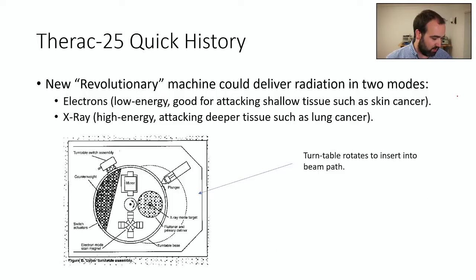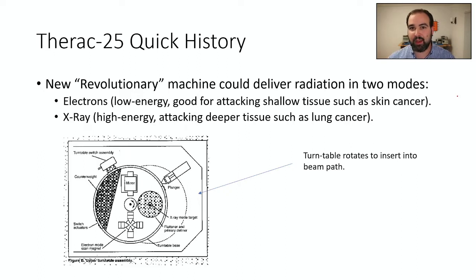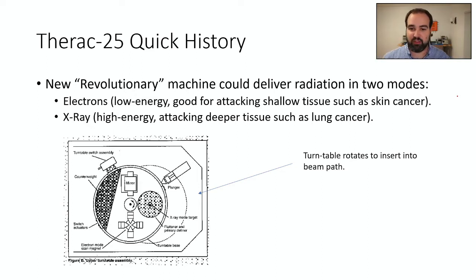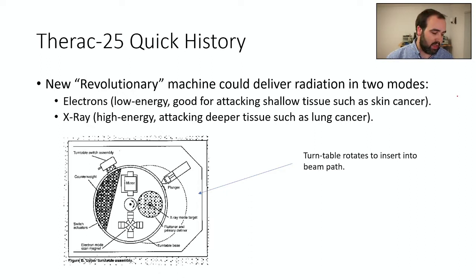The idea was that one machine — albeit expensive and requiring a special room — could do two different types of treatments, hypothetically reducing hospital costs. One setting was a low energy mode delivering an electron beam, good for shallow tissue right at the surface. The other was a high energy mode using x-rays, which penetrate much deeper into the body — more dangerous but necessary for things like lung cancer requiring deep radiation treatment.